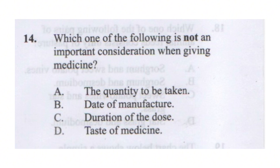Let's move to question 14: which one of the following is not an important consideration when giving medicine? Choice A — quantity to be taken — you definitely have to check the amount of medicine given, so choice A is a valid consideration. Choice B — date of manufacture — the important thing to check is the expiry date, not the manufacturing date. Manufacturing date is not the most helpful, so choice B is out.